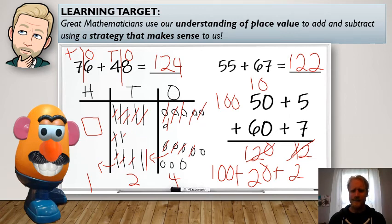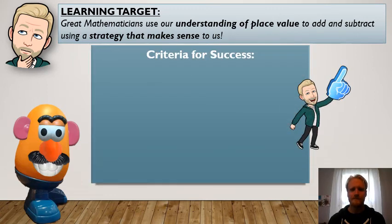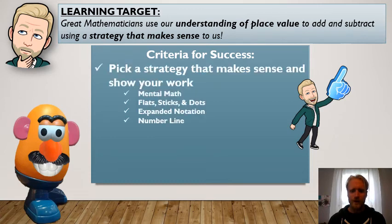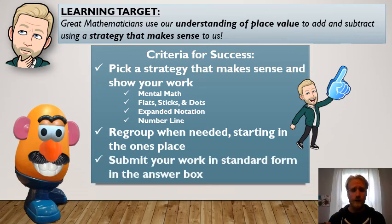All right. Yeah. All right. So let's recap. Great mathematicians use our understanding of place value to add and subtract using a strategy that makes sense to us. For today's work, make sure you pick a strategy that makes sense and show your work. I just demonstrated. I can use more than one strategy, but make sure you're picking one that makes sense to you.